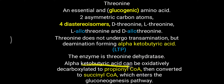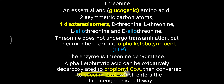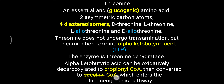This alpha-ketobutyric acid can be oxidatively decarboxylated to make propionyl-CoA. So the pathway is: threonine → alpha-ketobutyric acid → propionyl-CoA. This propionyl-CoA is then converted into succinyl-CoA, which is an intermediate of the TCA cycle. From the TCA cycle it is diverted to form oxaloacetate, which enters the gluconeogenesis pathway to form glucose. That is why threonine is called a glucogenic amino acid.